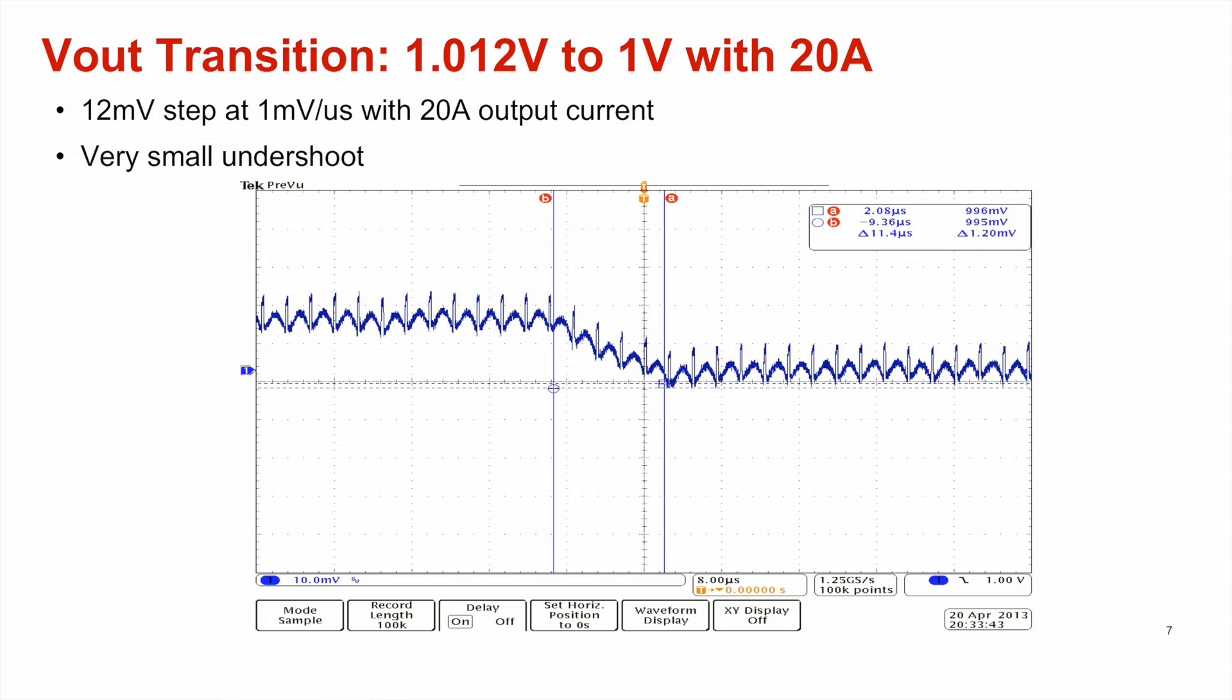The VOUT command enables an output voltage adjustment with 2 mV resolution in an open or closed-loop fashion, and the output voltage transition rate is programmable with the VOUT transition rate command.